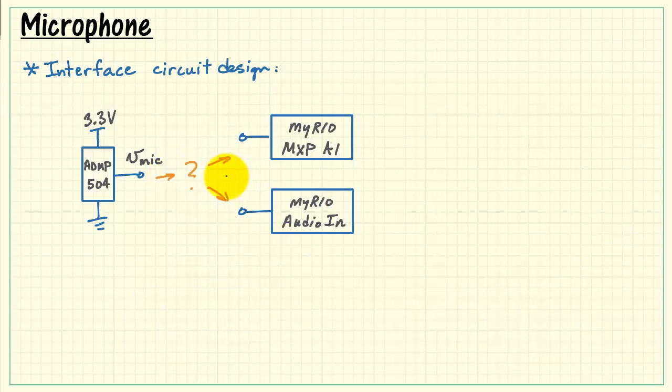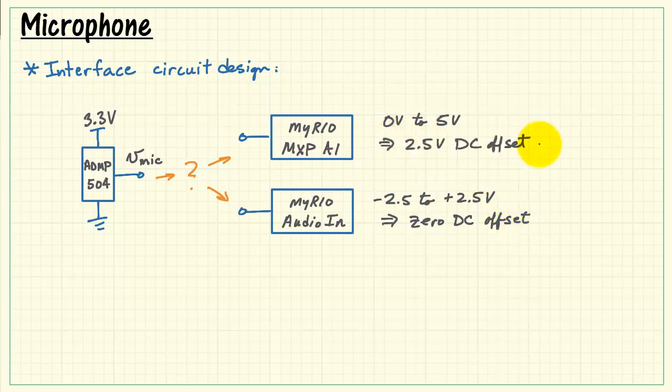Now to decide how to design the interface circuit, we need to know a little bit more details about the destinations. 0 to 5 volts for the analog inputs, and then minus 2.5 to plus 2.5 volts, or 0 DC offset when using the audio in. The analog input needs 2.5 volts DC offset. Back here at the signal source, we have the microphone producing plus-minus 0.25 volts, sitting on a 0.8 volt DC offset.